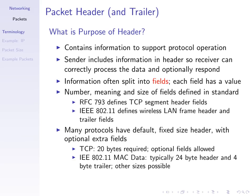For example, IEEE 802.11 wireless LANs: in the MAC data frame there's typically a 24-byte header and a 4-byte trailer, but in fact there may be other sizes possible depending upon how the wireless LAN is used.